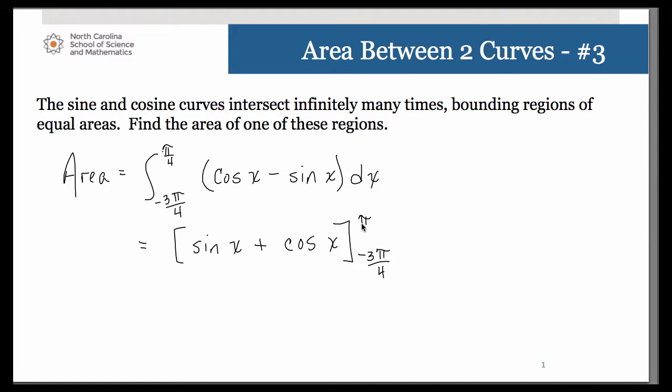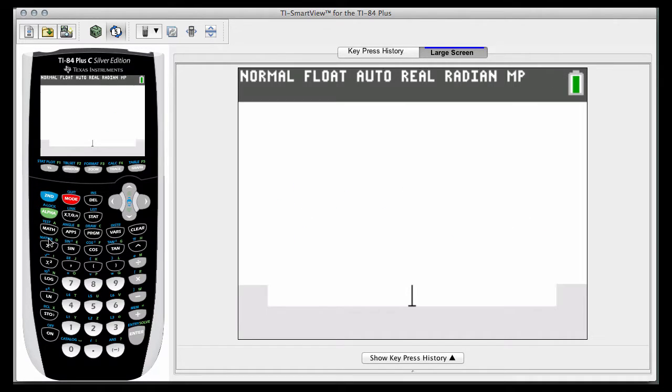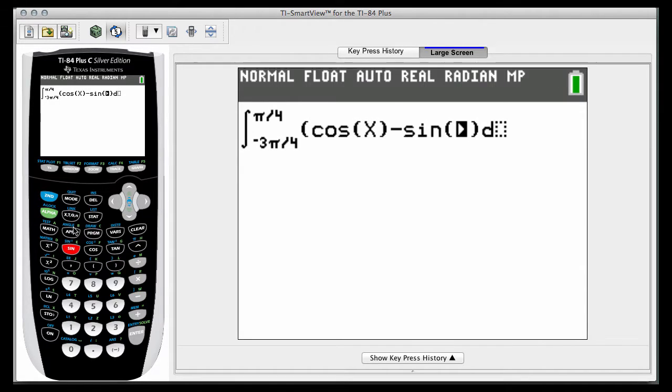This would be a great example of one you might have to do by hand, but we could use our graphing calculator. So let's go ahead and try that. My lower limit was negative 3 pi over 4. My upper limit was pi over 4. And cosine of x minus sine of x dx.